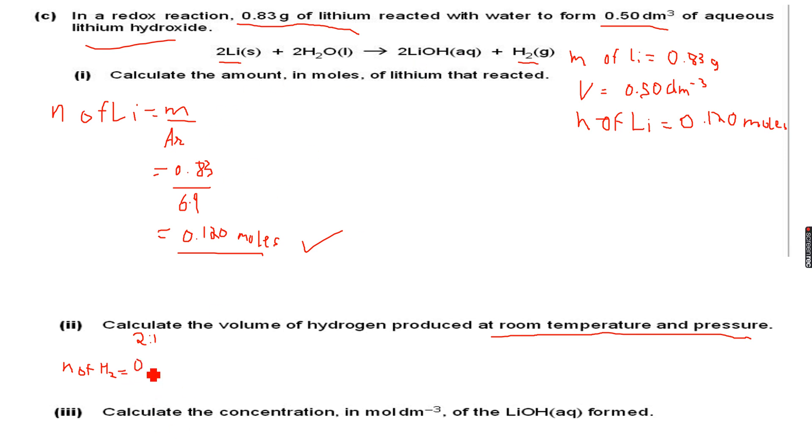Since 2 moles of lithium will form 1 mole of hydrogen, 0.120 moles of lithium will form 0.120 divided by 2 moles of hydrogen, which is 0.0601 moles. This is to three significant figures, 0.0601 moles of hydrogen. So now I know the number of moles of hydrogen.